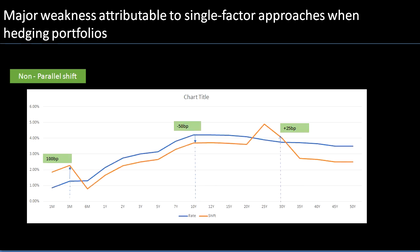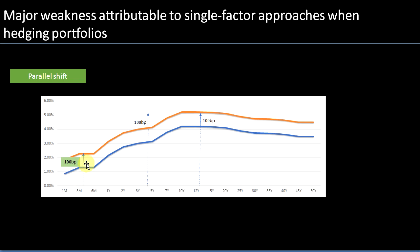In reality, the whole interest rate curve hardly ever goes through a parallel shift. Shifts are normally non-parallel — short-term tenors behave very differently compared to long-term tenors and medium-term tenors. Each group of the interest rate curve — short-term, medium-term, long-term tenors — all behave in very different ways. This means that a single factor approach, which applies one parallel shift across the whole curve, assumes the entire curve behaves the same way, which is not true.